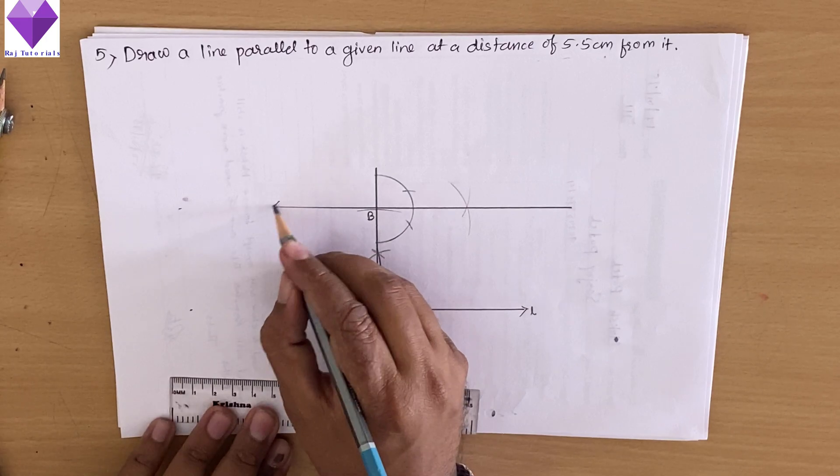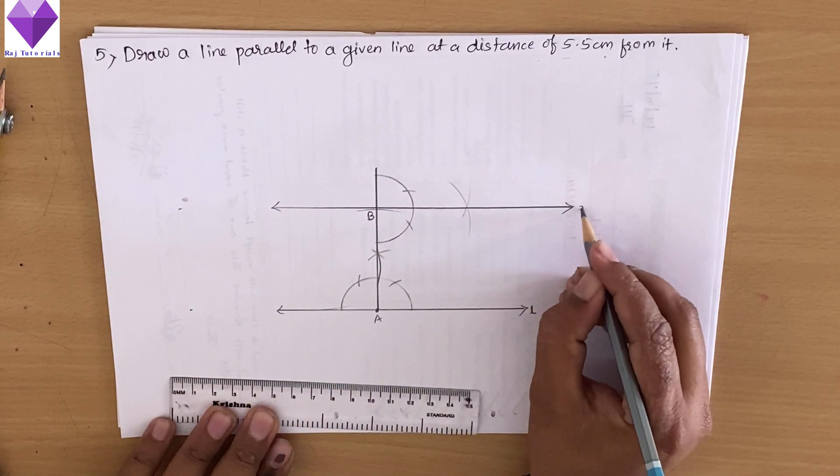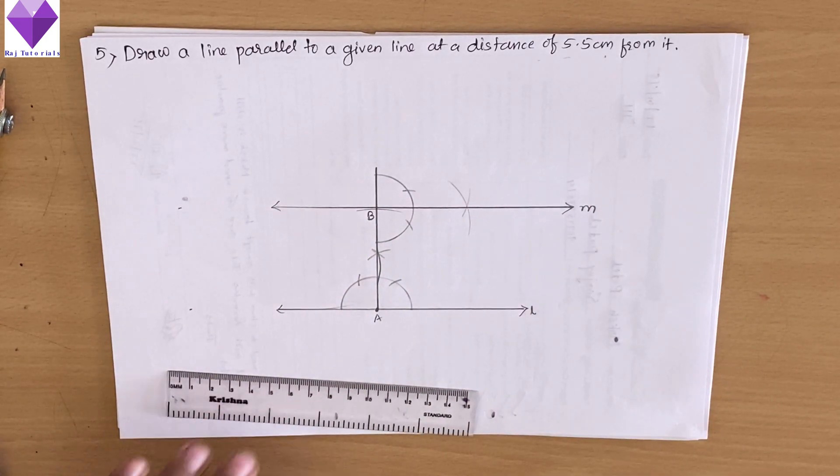So this is my line M, which is parallel to line L. Thank you.